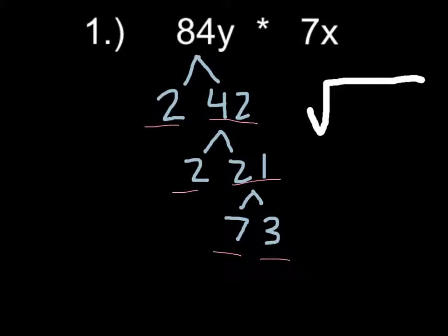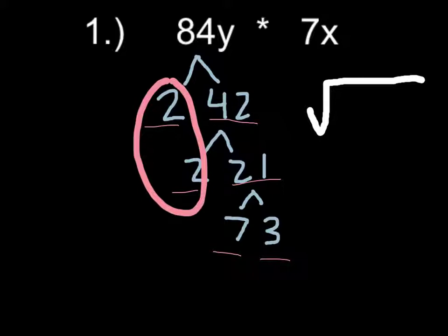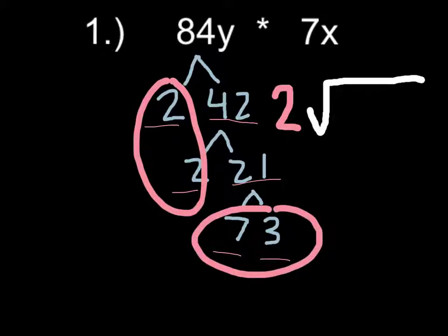The next step is putting all of these numbers together. First you find the pairs, which are the 2s. Then you put the pair on the outside, but you only put one number from the pair. The other numbers, 7 and 3, you multiply together because they don't have any pairs. So 7 times 3 is 21. But there's still y up here, and y doesn't have a pair, so it would actually be 21y.